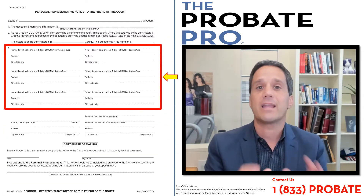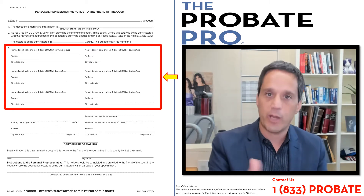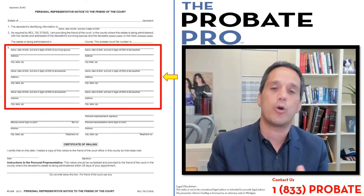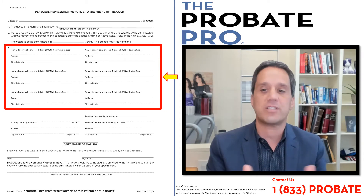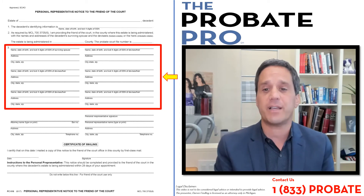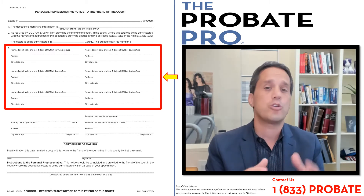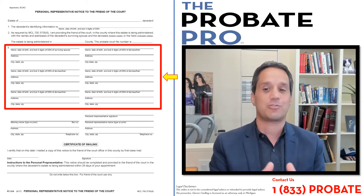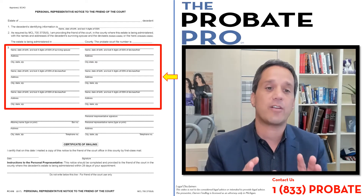Section three of the form provides that you have to give notice to the Friend of the Court of any of the heirs — meaning without a will, the heirs under intestacy law — or devisees, being those identified in the will. The statute specifically says that the personal representative is not required to notify the Friend of the Court of a devise to a trustee of an existing trust or a trustee under a will. So there are specific requirements set forth here.